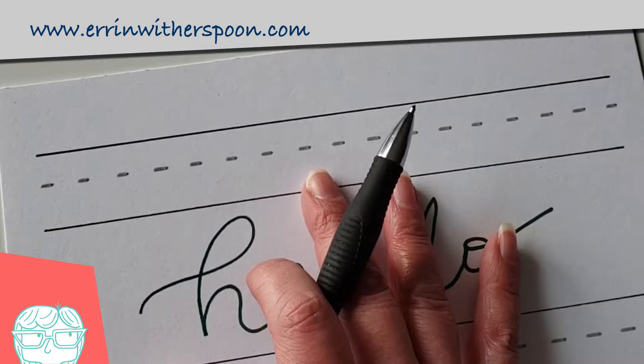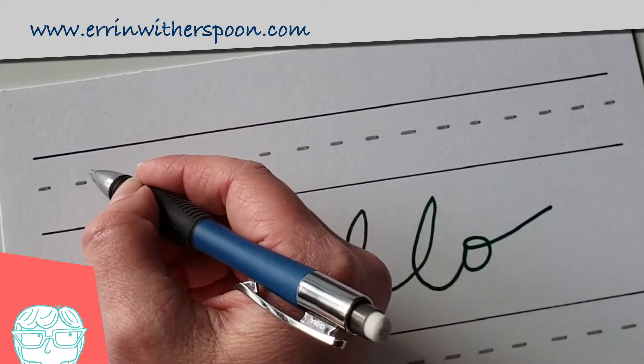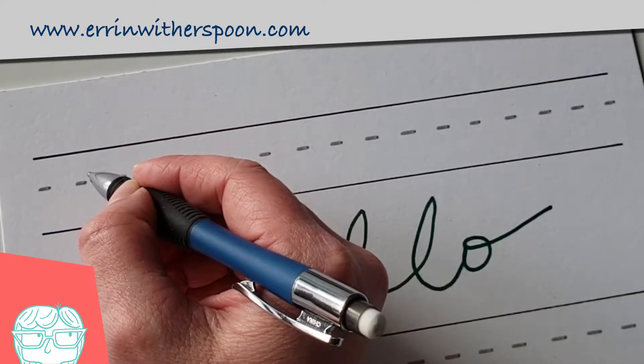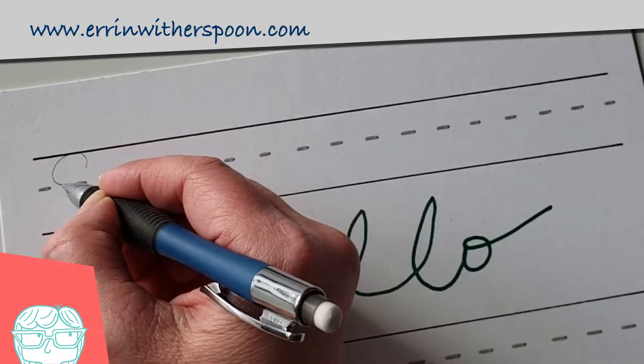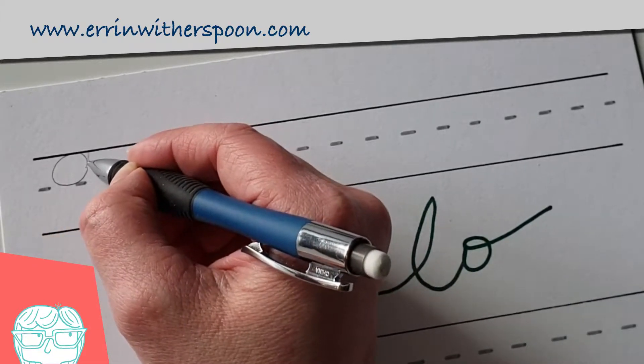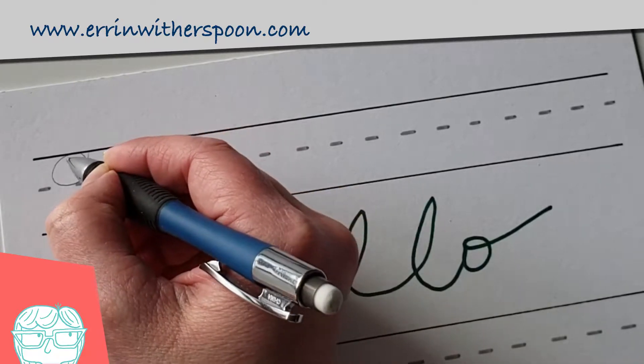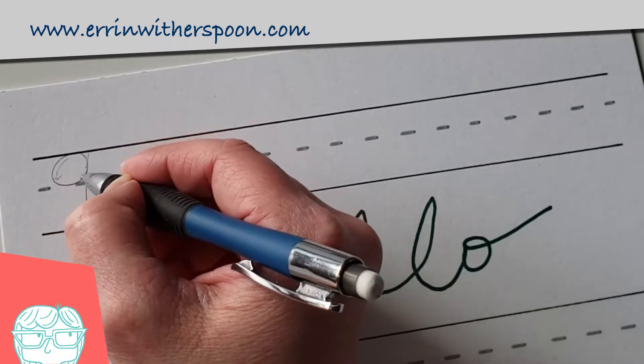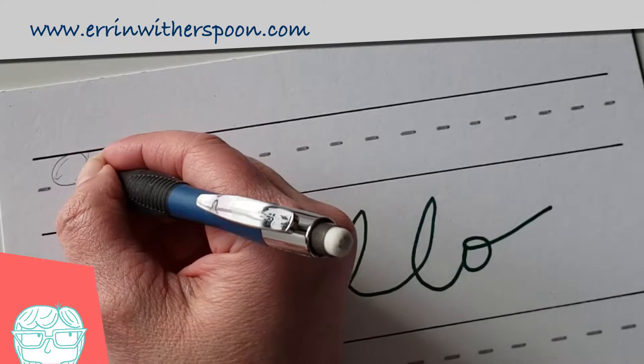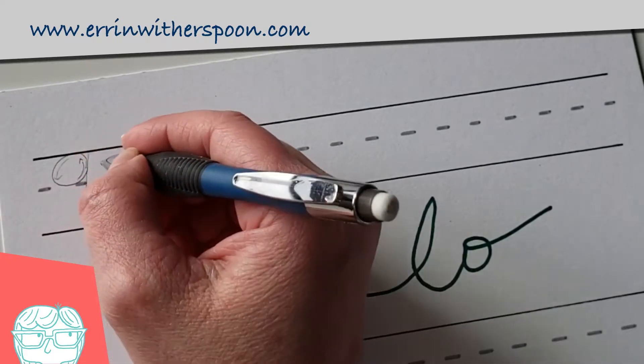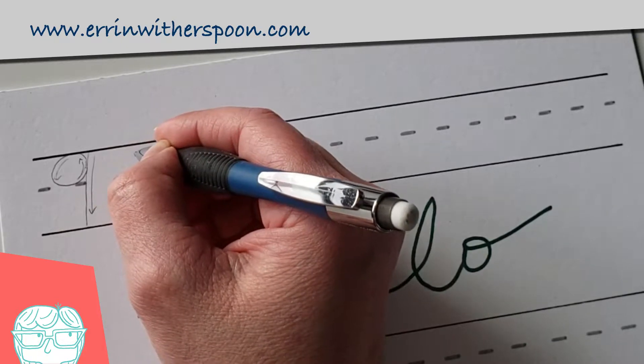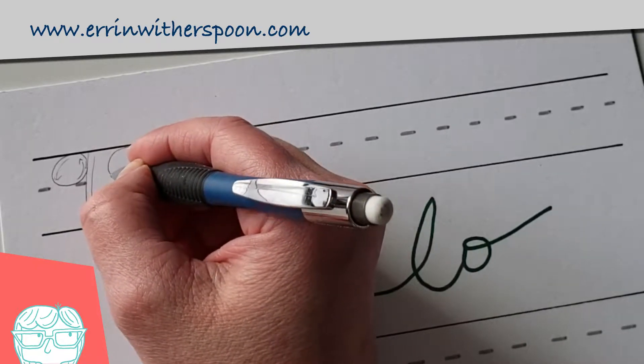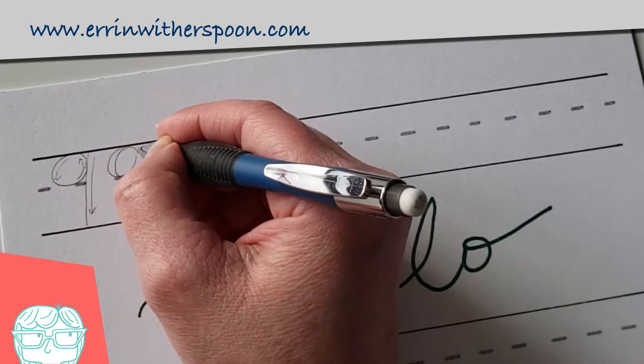The secret to hand lettering is that you want to leave the up strokes thin and thicken the down strokes. So I'm going to show you with a pencil here where exactly you're going to want to thicken. So that's the down stroke. That is also the down stroke. So this part of the bump here is a down stroke. That would be an up stroke and this part is the down stroke as well. So you're going to thicken those down strokes and when you do it'll look something like this.